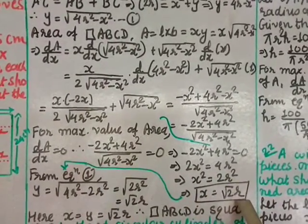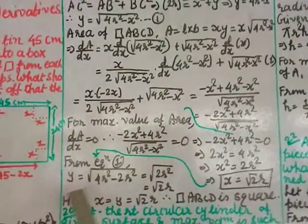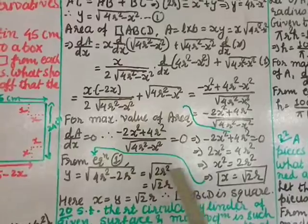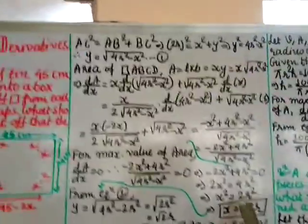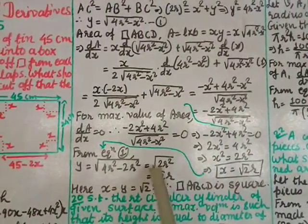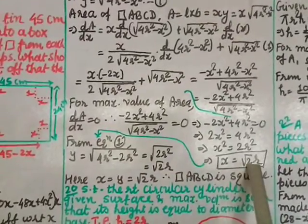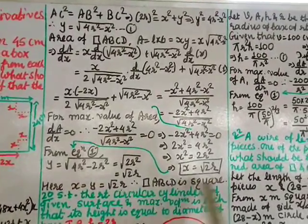Substituting x squared = 2r squared into equation 1: y = square root of (4r squared minus 2r squared) = square root of (2r squared) = r root 2. So both x and y equal r root 2, meaning x equals y. Therefore ABCD is a square. This proves that of all rectangles inscribed in a circle, the square has maximum area.